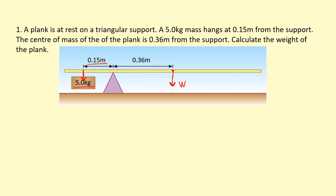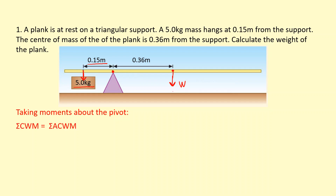We need to choose where to take moments about. In this case it's pretty obvious — we should take moments about the pivot. By taking moments about the pivot, we can ignore the forces acting on the pivot, because the triangular block applies a force to the plank, but since we're taking moments about that pivot point, we don't have to worry about that. So we write: sum of clockwise moments equals sum of anticlockwise moments. Sigma just means sum.